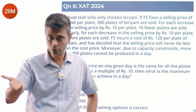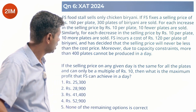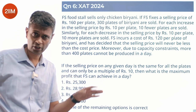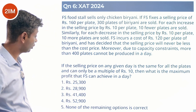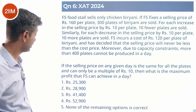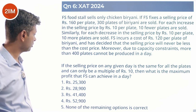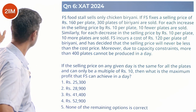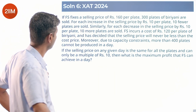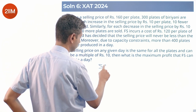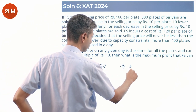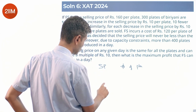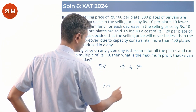FS has decided the selling price will never be less than the cost price — you don't want to lose money. Moreover, due to capacity constraints, more than 400 plates cannot be produced in a day. If the selling price on any given day is the same for all plates and can only be a multiple of ₹10, what is the maximum profit FS can achieve in a day? Let's think about selling price and number of plates.